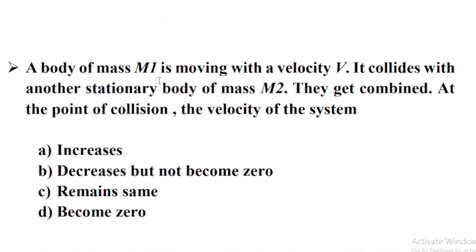A body of mass M1 is moving with a velocity V. It collides with another stationary body of mass M2. They get combined. At the point of collision, the velocity of the system Option C remains same.